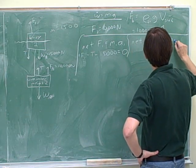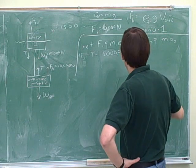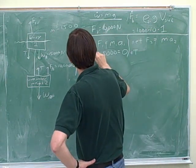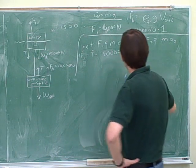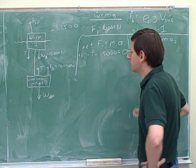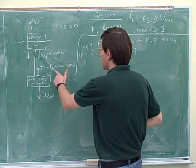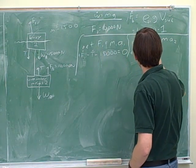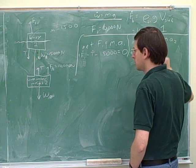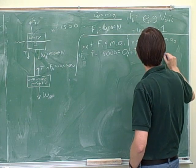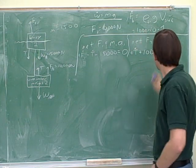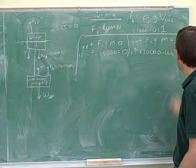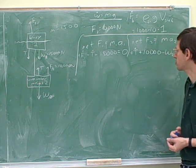Net force two equals m·a₂. So now we have a positive tension, and we already figured out this buoyant force — positive 10,000. We have to figure out this weight. This is going to be floating as well, so this would be zero.